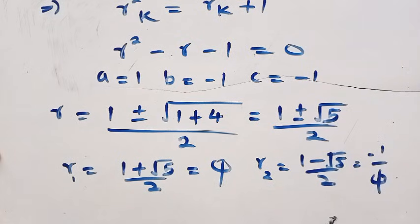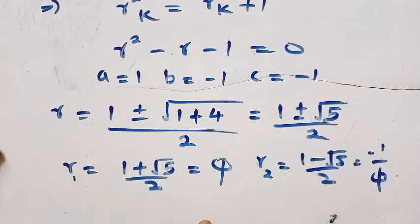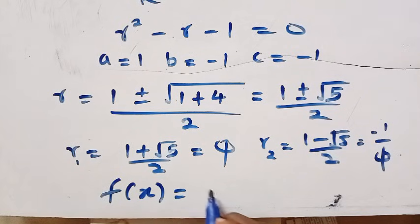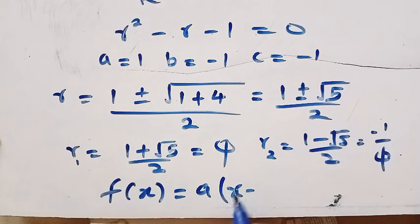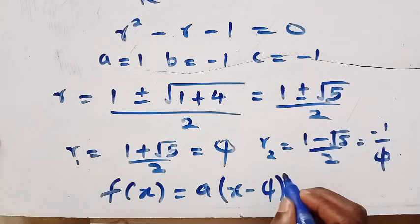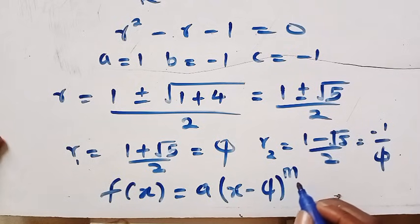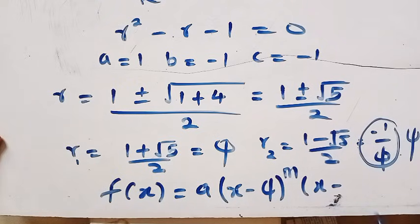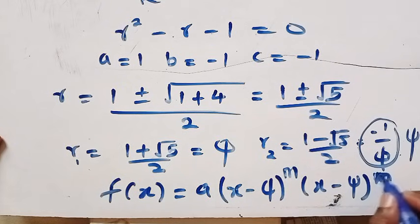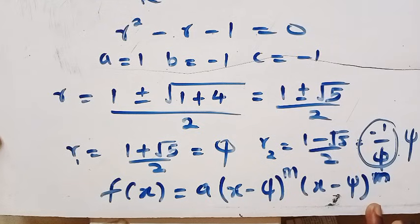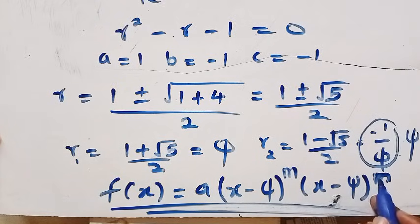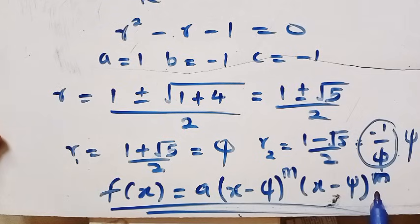Since we have found these two root expressions, we can now write the general solution. f(x) equals a times (x - φ)ᵐ times (x - ψ)ⁿ, where φ = (1+√5)/2 and ψ = (1-√5)/2, and where m and n are both non-negative integers. This is the general solution, and it works for all real numbers.